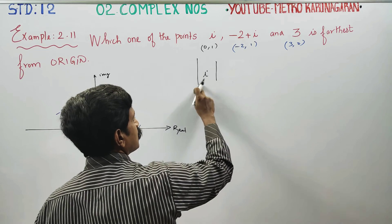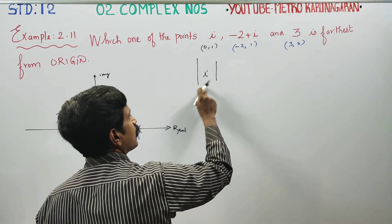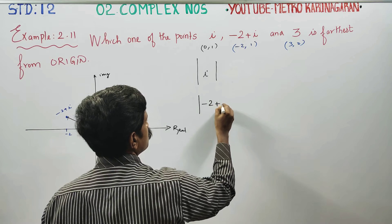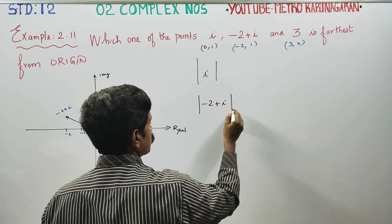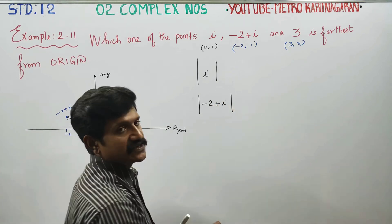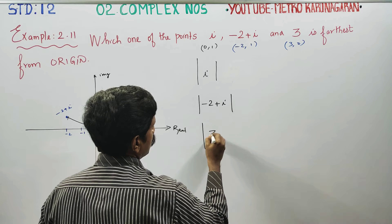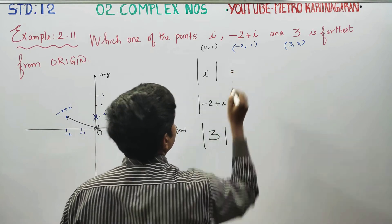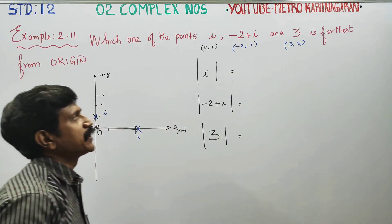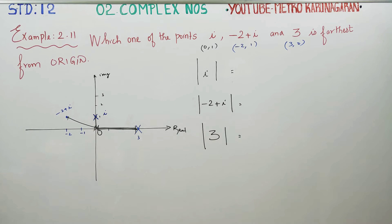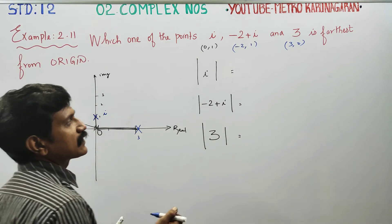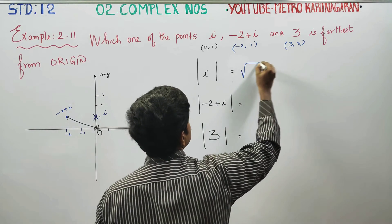Modulus means distance from the origin. If we find the modulus of each point, that tells us the distance from the origin. So let us find the modulus of i, minus 2 plus i, and 3.